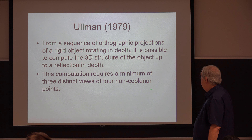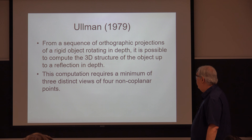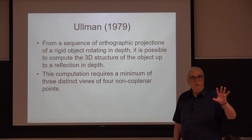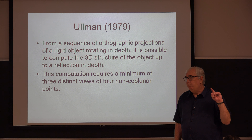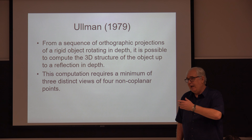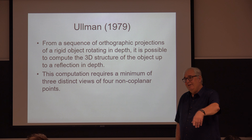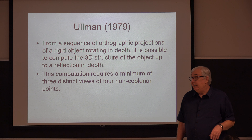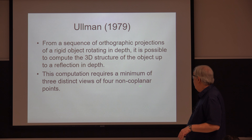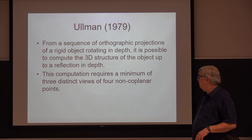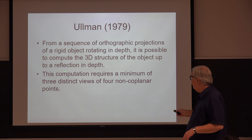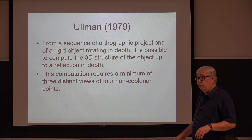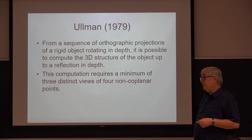There are a couple of limitations. This computation requires a minimum of three distinct views. Ullman was able to prove that if you don't have at least three different views, it's mathematically impossible to derive the 3D structure from just two views — you have to have three. You also need four non-coplanar points. The important one I want to focus on is the requirement of three distinct views, as we'll spend a lot of time on that today.